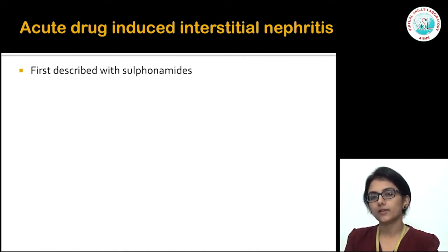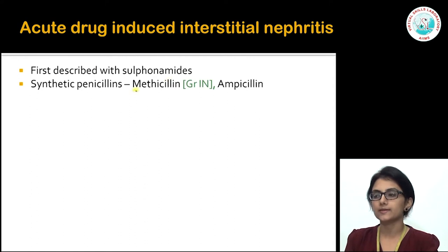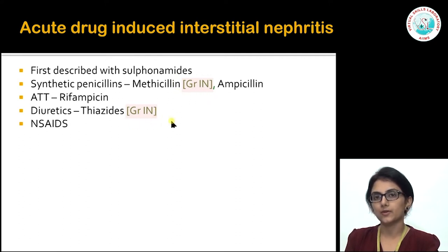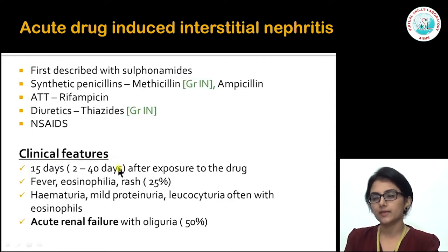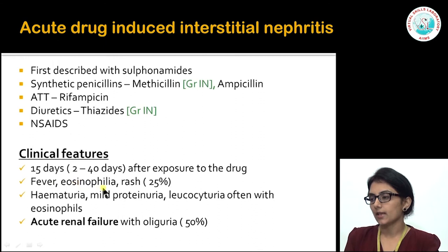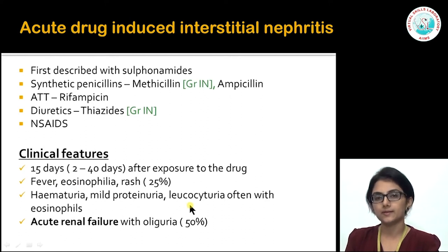Acute drug-induced interstitial nephritis was first described with sulfonamides and has also been described with synthetic penicillins like methicillin and ampicillin, rifampicin as a component of ATT, thiazide diuretics, and NSAIDs. After exposure to the drug — approximately 15 days — patients present with fever, skin rash, and eosinophilia on peripheral blood examination. Urinary findings include hematuria, mild tubular-level proteinuria, and pus cells rich in eosinophils. Renal dysfunction with oliguria is seen in 50% of patients.